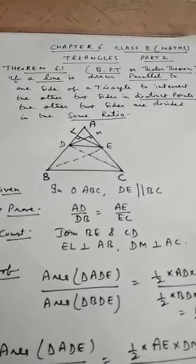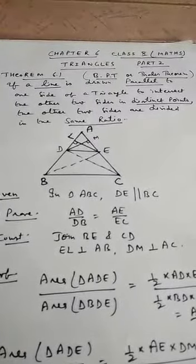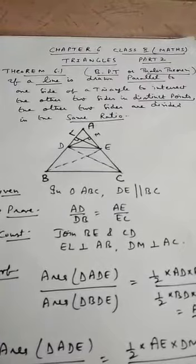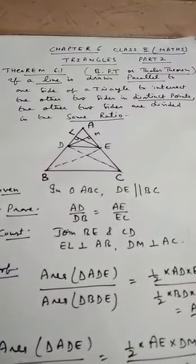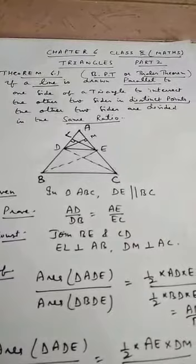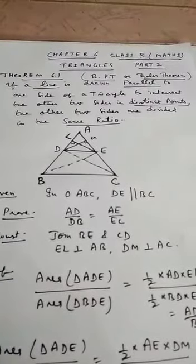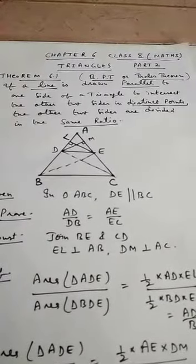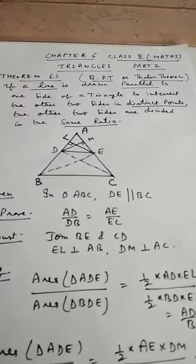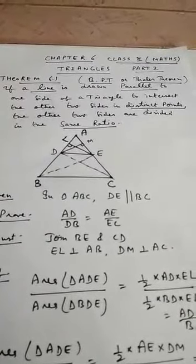To prove: the other two sides are divided in the same ratio, that is AD by DB is equal to AE by EC. In construction, we join BE and CD, and draw EL perpendicular to AB and DM perpendicular to AC.